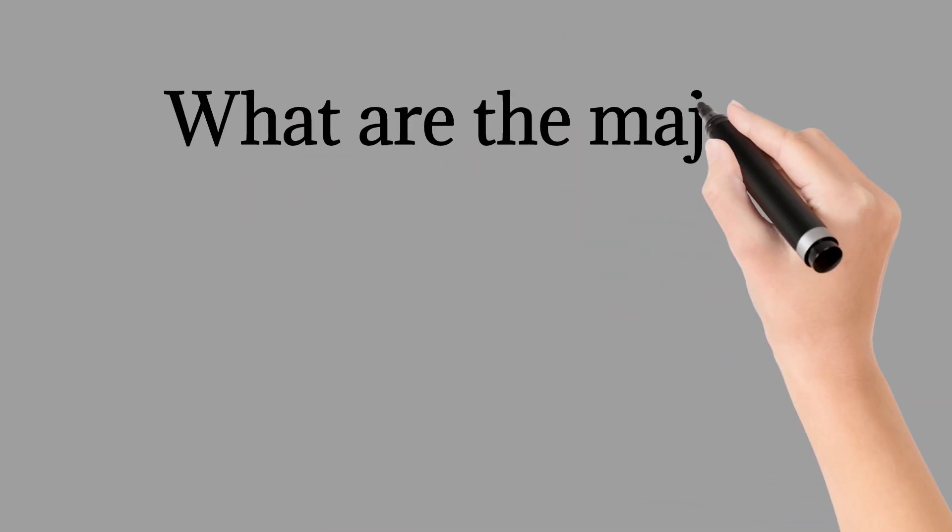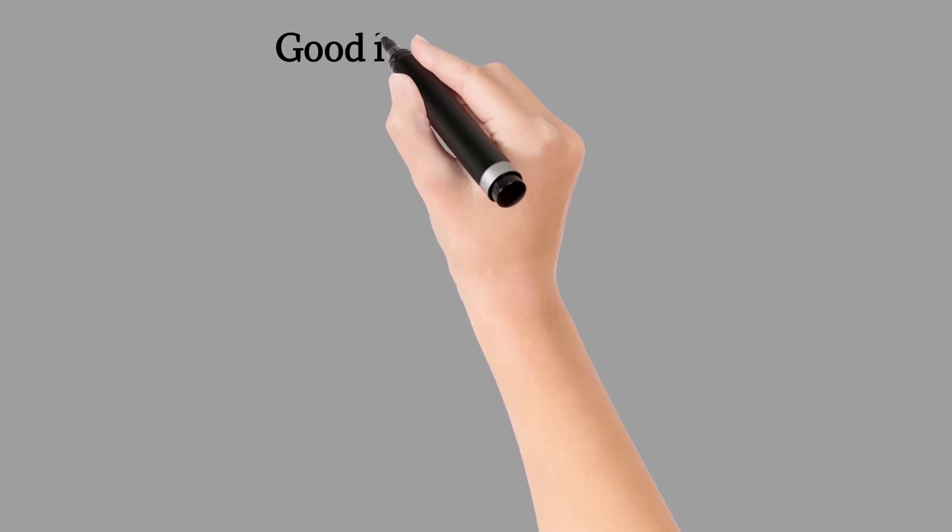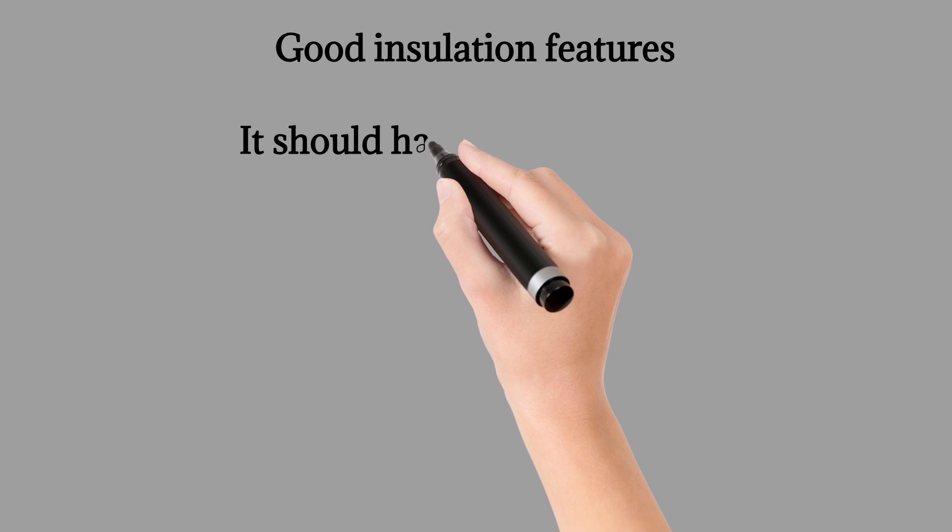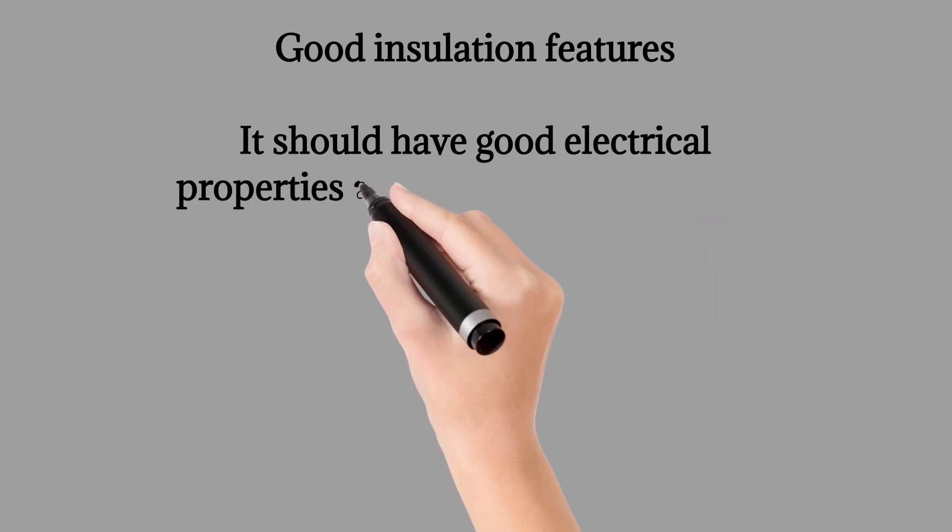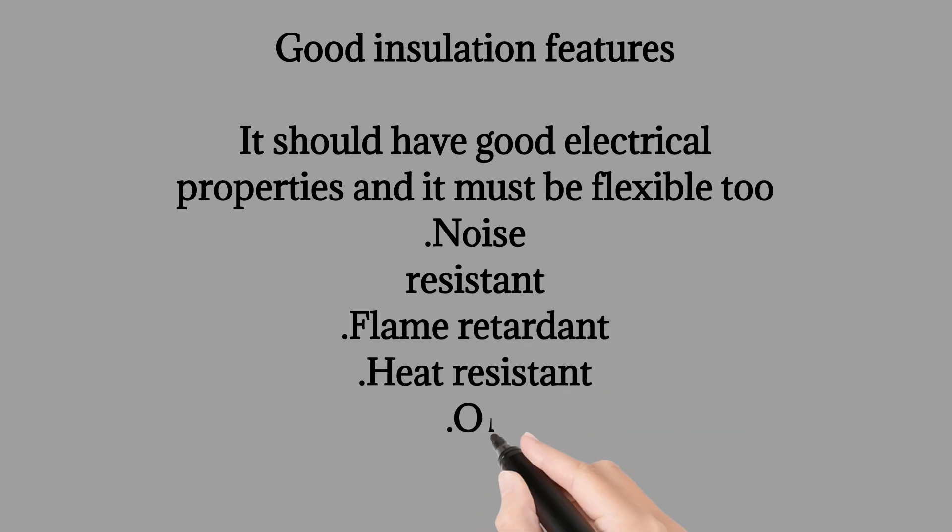What are the major characteristics required for an instrument cable? Good insulation features, it should have good electrical properties and it must be flexible, noise-resistant, flame retardant, heat-resistant, oil retardant.